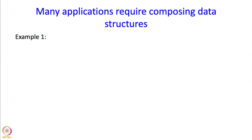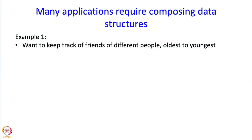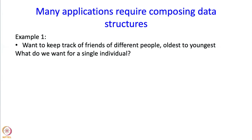So let me take an example. Suppose I am writing a program in which I want to keep track of friends of different people. For each person I want to make a list of his or her friends in the order oldest to youngest. And then maybe I might want to do some processing on those lists. So what data structure do we use? Well first of all, I require this data structure for all people — lots of people.